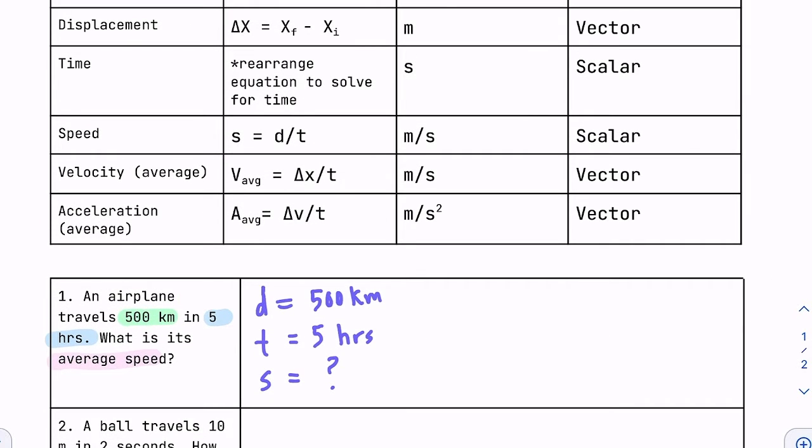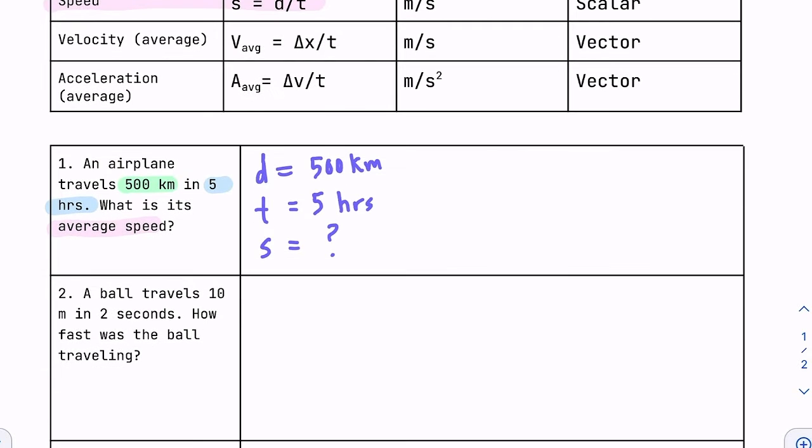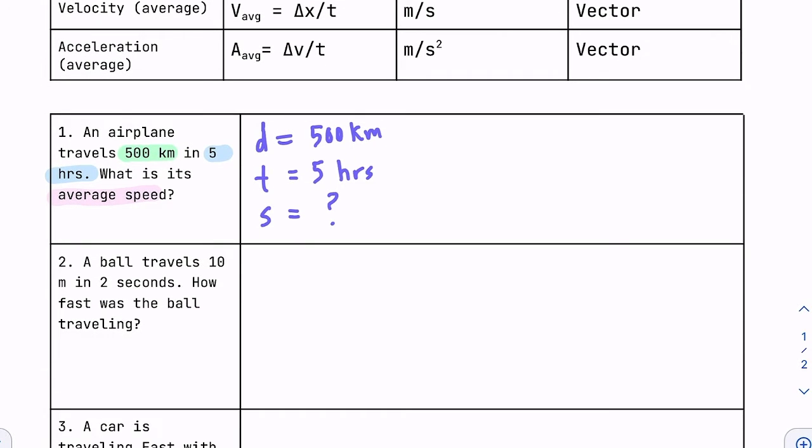Now we can look at our different equations. So the equation of interest would be this one: speed is equal to distance divided by time. I highly recommend that you always start off by just writing out the equation in its pure form without any numbers plugged in.